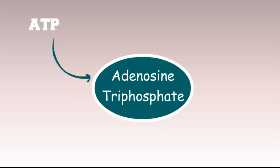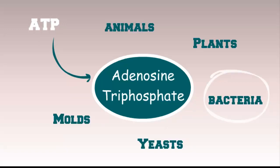ATP, also known as adenosine triphosphate, is a universal energy molecule found in animals, plants, yeasts, molds, and bacteria.